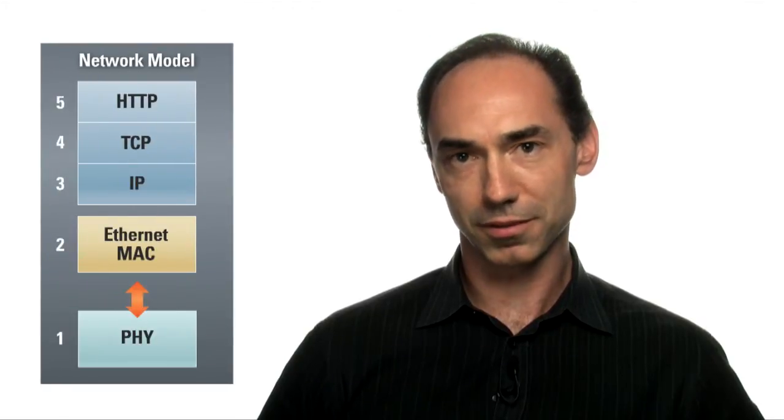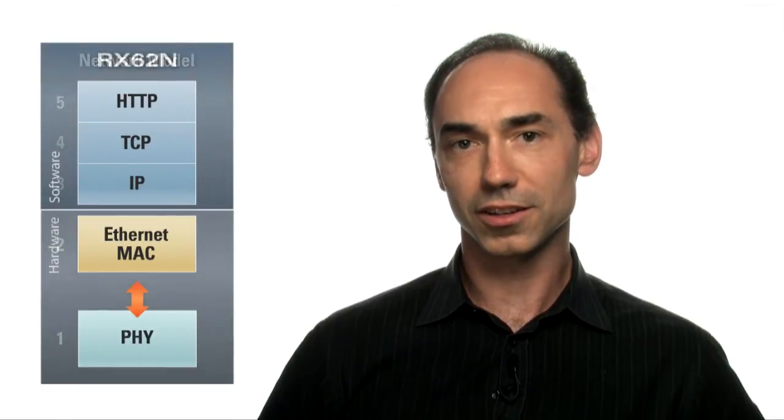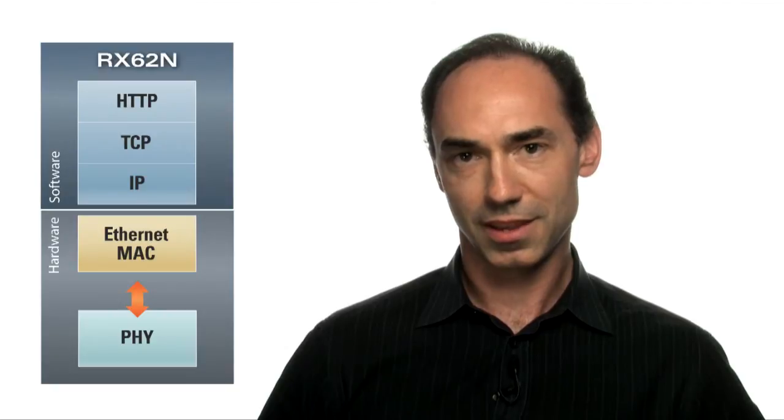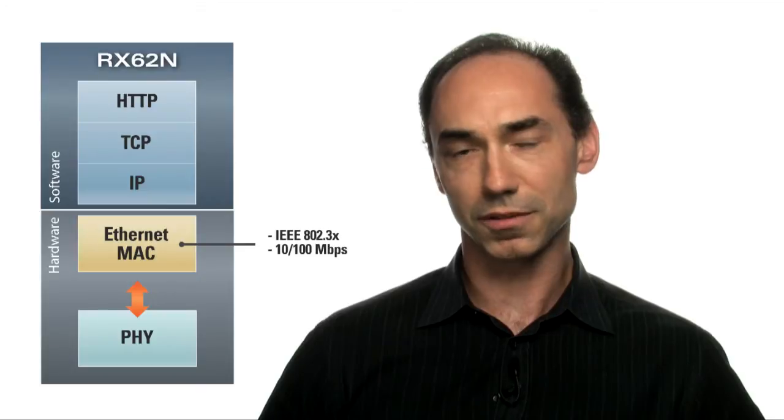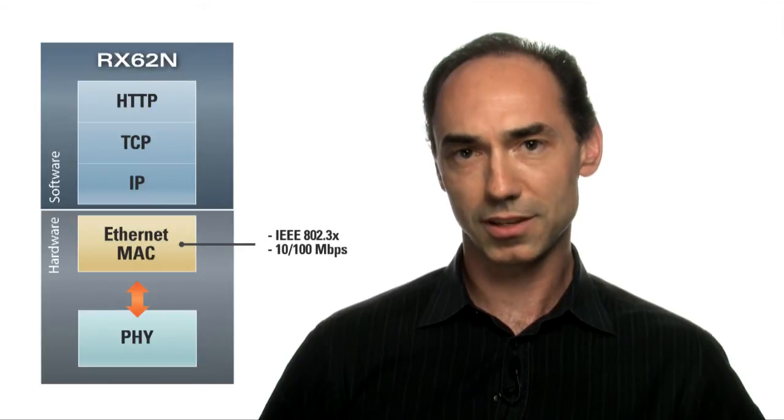Let's say, for example, that you wanted to create a web server using an RX microcontroller. In this case, there would be five layers in the networking model. The PHY and MAC layers are accomplished using hardware. The RX62N has an 802.3 compliant Ethernet MAC that is capable of 10 or 100 megabits per second.